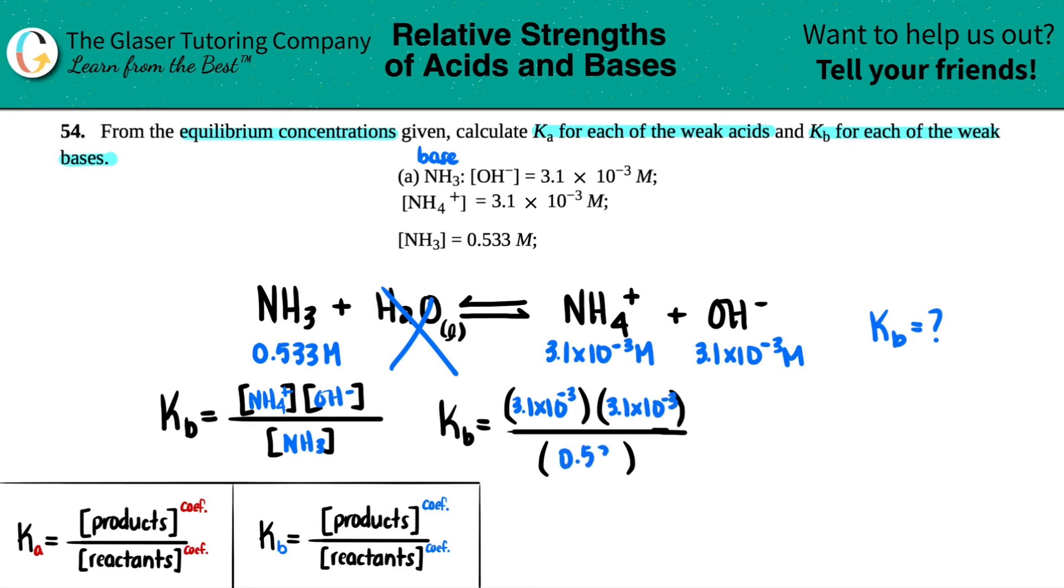I'm going to get my Kb value, and this should be quite small because we're dealing with a weak base. 3.1×10^-3 times 3.1×10^-3 divided by 0.533, and with two sig figs, that's 1.8×10^-5.